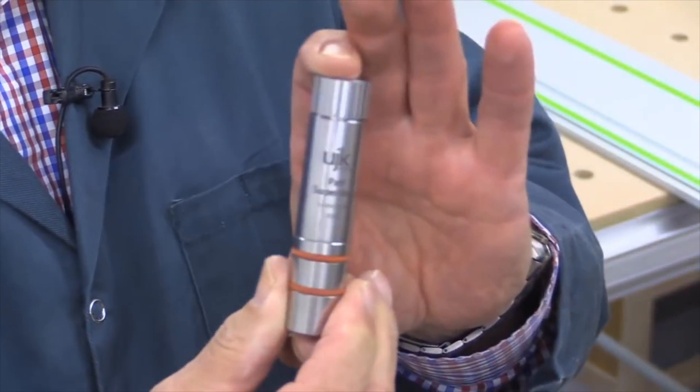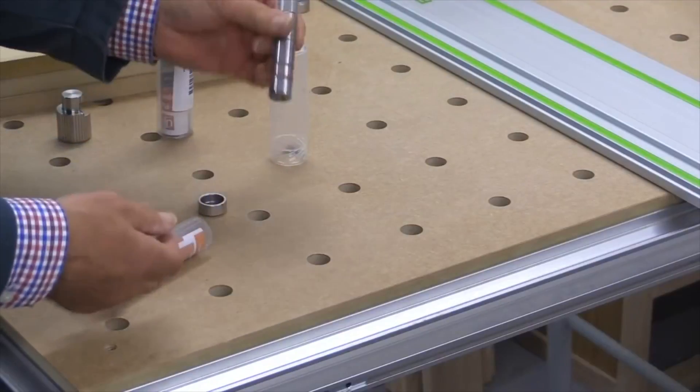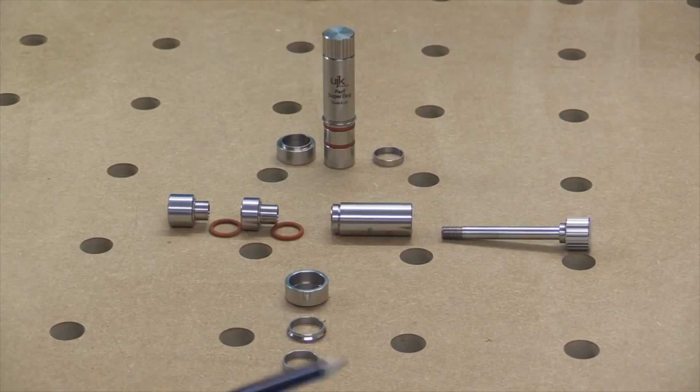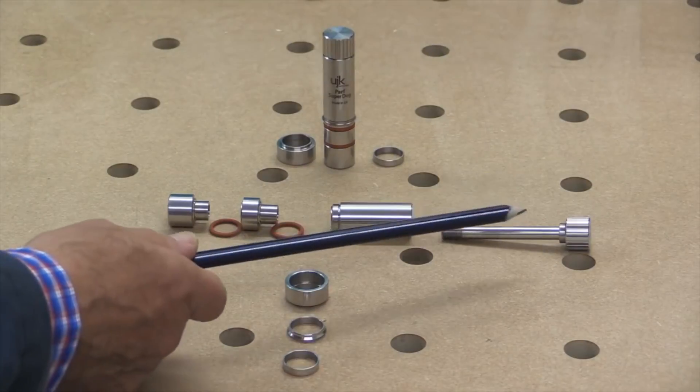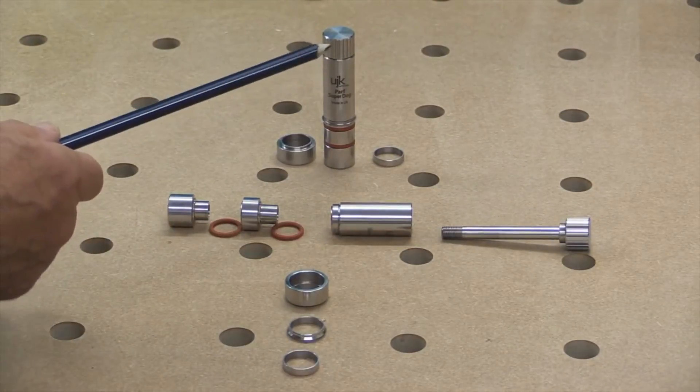This is the UJK Parf Superdog. Now you might think, well what on earth is that? Right, let's just identify the parts very quickly. We start with the locking knob which is at the top here, it's got a shaft associated with it, there's the locking knob.